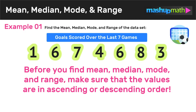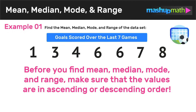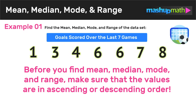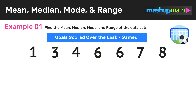Now, before you can find the mean, median, mode, and range, you have to make sure that the values are in ascending or descending order. That just means either from least to greatest or from greatest to least. For our examples today, we are going to rearrange the numbers from least to greatest, which is also known as ascending order. So all we did was rearrange the numbers in the data set from least to greatest, from smallest to largest, from left to right. And now we are ready to find the mean, median, mode, and range.